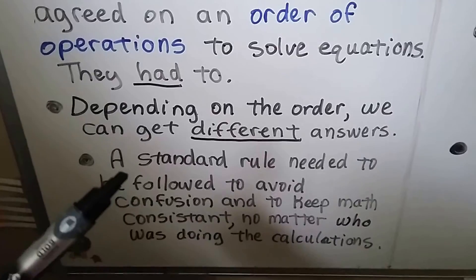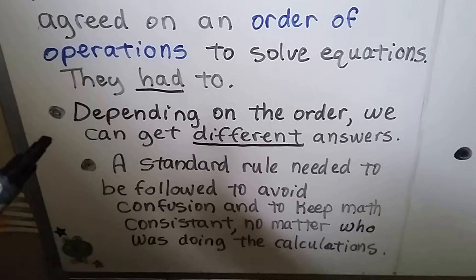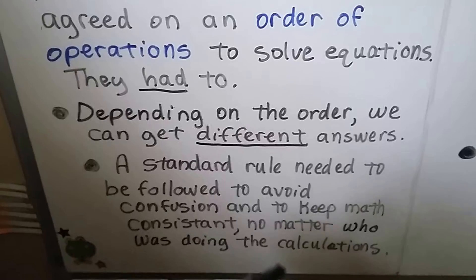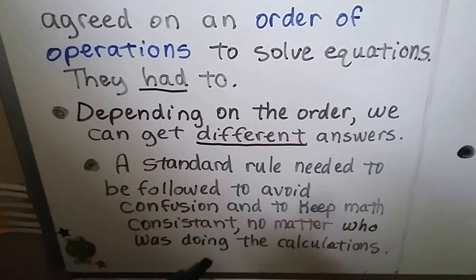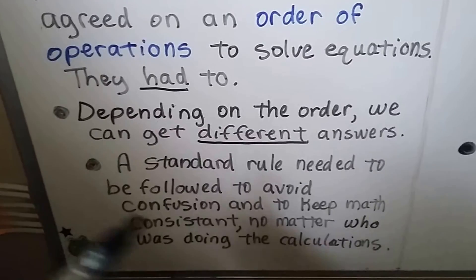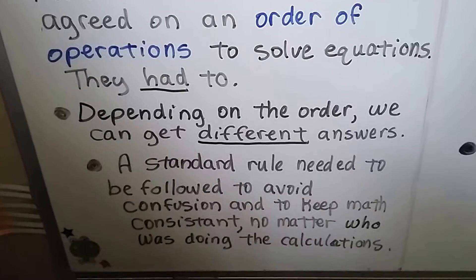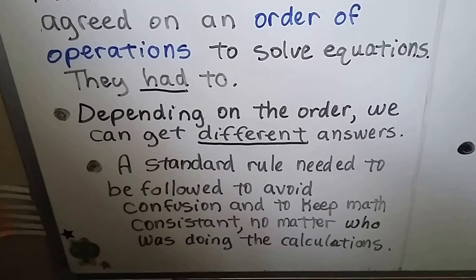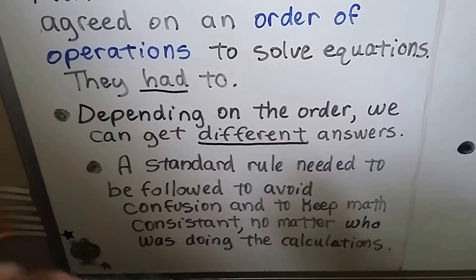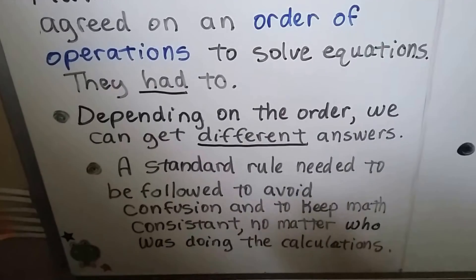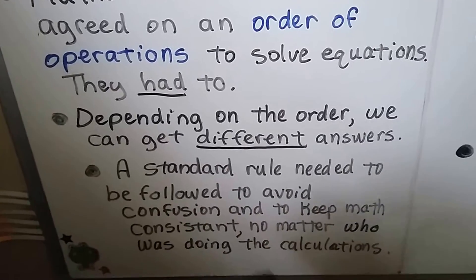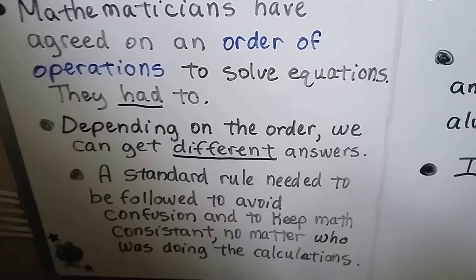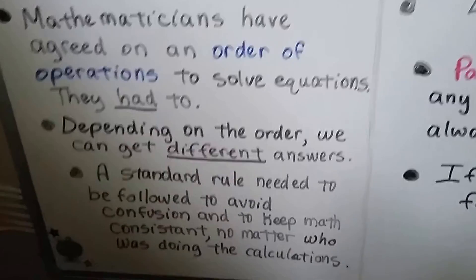One person in one country could say 'I'm going to do it this way' and another person in another country could say 'I'm going to do it this way' and they would get two different answers — it was just chaos. By having the order of operations, everyone agreed there's a standard rule to follow, and that'll be considered the right answer.